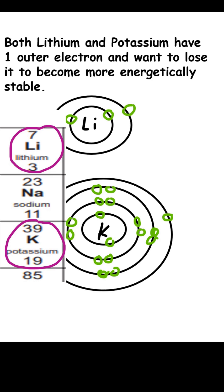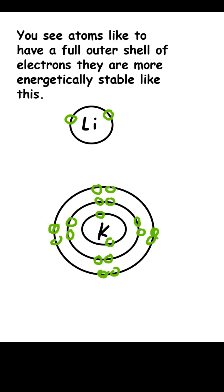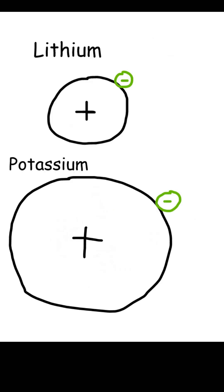So why is potassium more reactive? Because it's further down the group. Both lithium and potassium have one outer electron and they want to lose this to become more energetically stable. Atoms like to have a full outer shell of electrons.